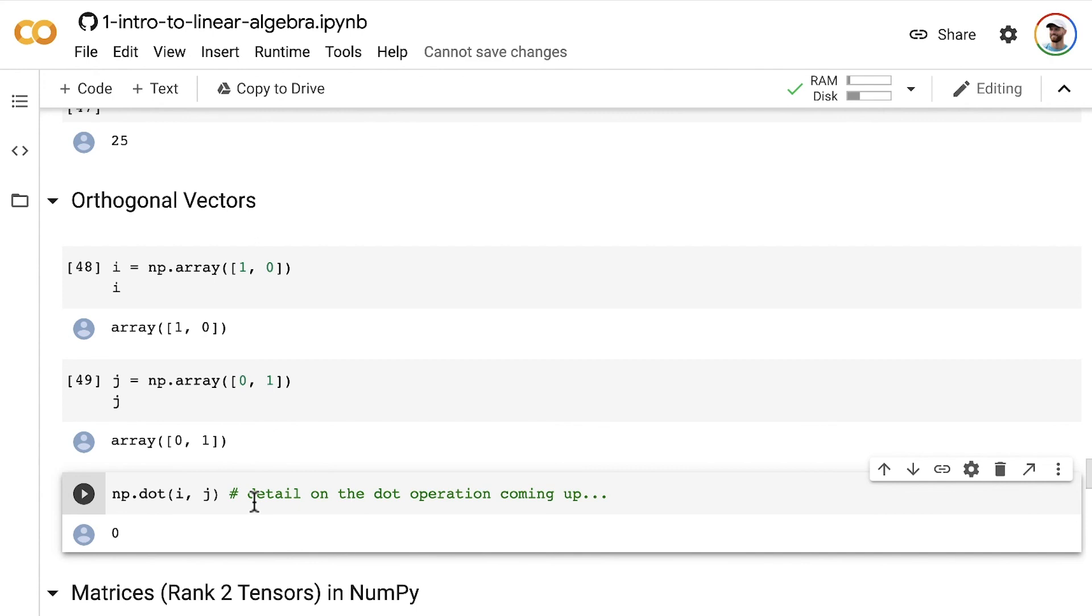Nice. We've now covered zero-dimensional tensors, more commonly known as scalars, and one-dimensional tensors, which we typically call vectors. Up next, we'll be approaching the end of this set of videos on data structures for algebra by digging into two-dimensional tensors, which are generally known as matrices.